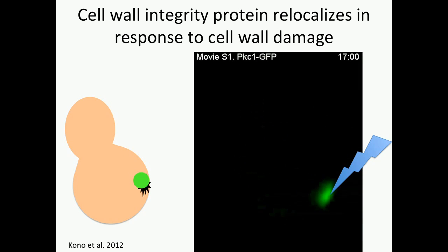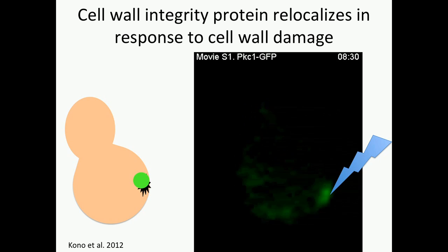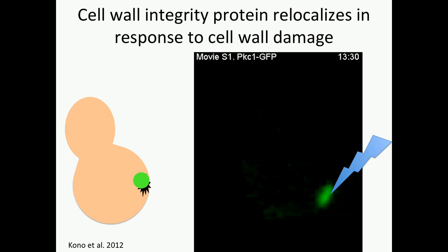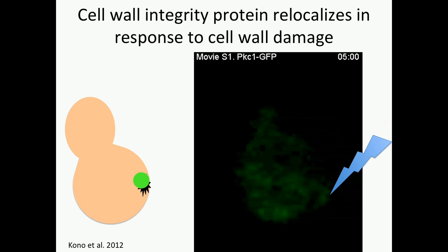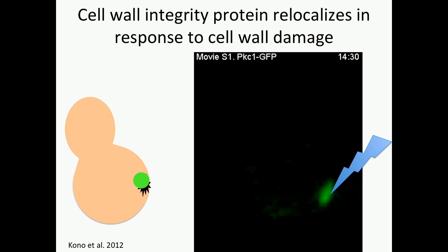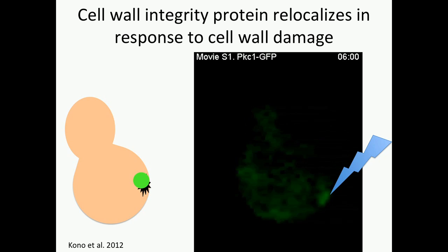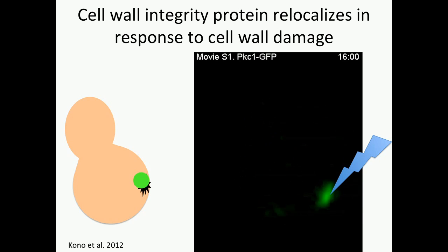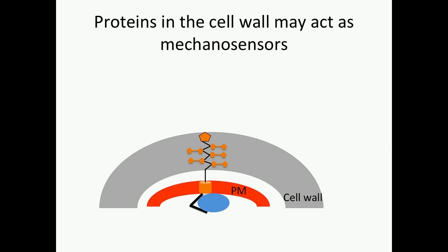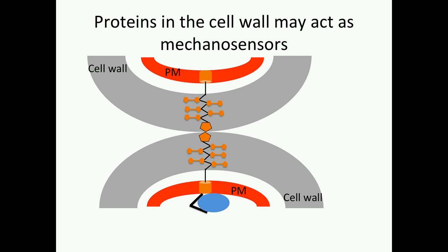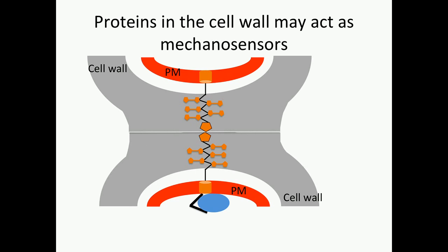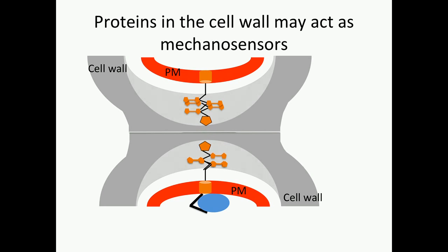This is Protein Kinase C1. It quickly relocalizes from the bud tip to this site of cell wall damage. So what is it that's special about the zone of cell fusion that allows for cell wall degradation to occur? One hypothesis is that there are mechanosensors within the cell wall that detect when two cells come into contact with each other — we know that the cell walls flatten out and then allow for fusion.